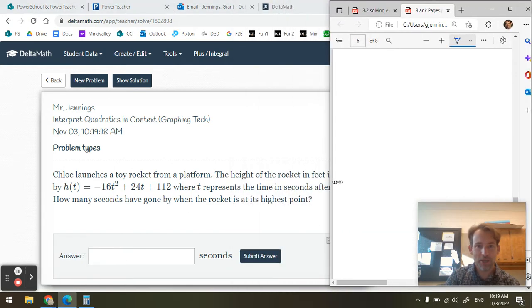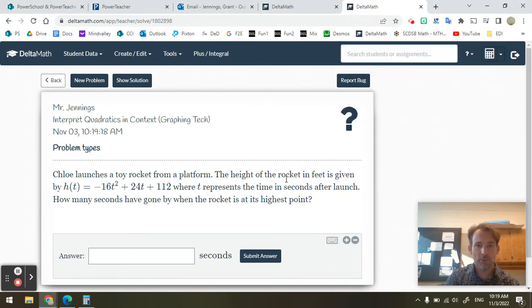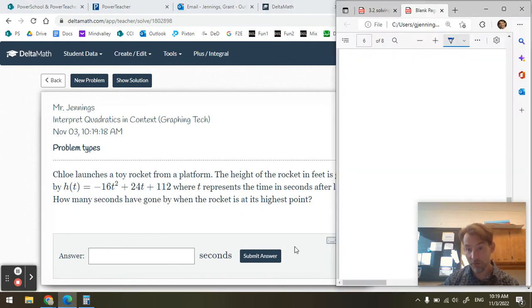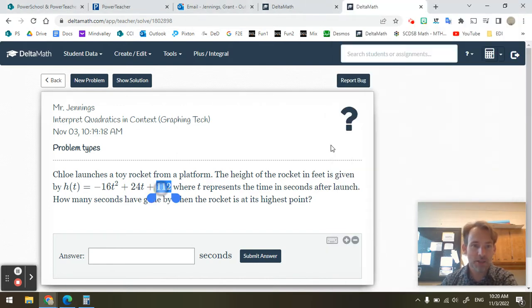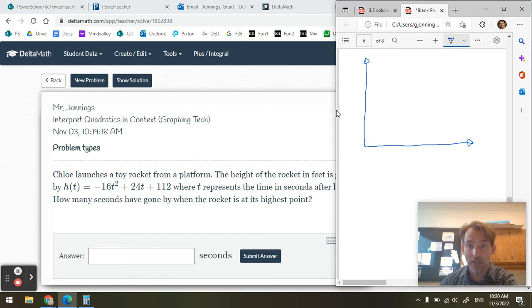So in the first case we have Chloe, who launches a toy rocket from a platform. The height of the rocket in feet is given by h(t) = -16t² + 24t + 112, where t represents the time in seconds after launch. How many seconds have gone by when the rocket is at its highest point? So prepare a visualization. Feel free to use Desmos, but I'll show you how I just visualize these. So I know that I'm only looking at positive values of time, I'm not looking at negative values of time, and I'm only looking at when the height of the rocket is positive. I don't need to know where it's underground. So I only need this part of the xy plane.